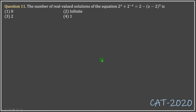This question contains an equation which is not exactly a polynomial equation, especially because the power has variables in it — x is in the power on the left-hand side. We'll have to think something special about how to solve this. The equation states: 2 to the x plus 2 to the minus x, that is 1 over 2 to the x, equals 2 minus (x minus 2) whole squared.